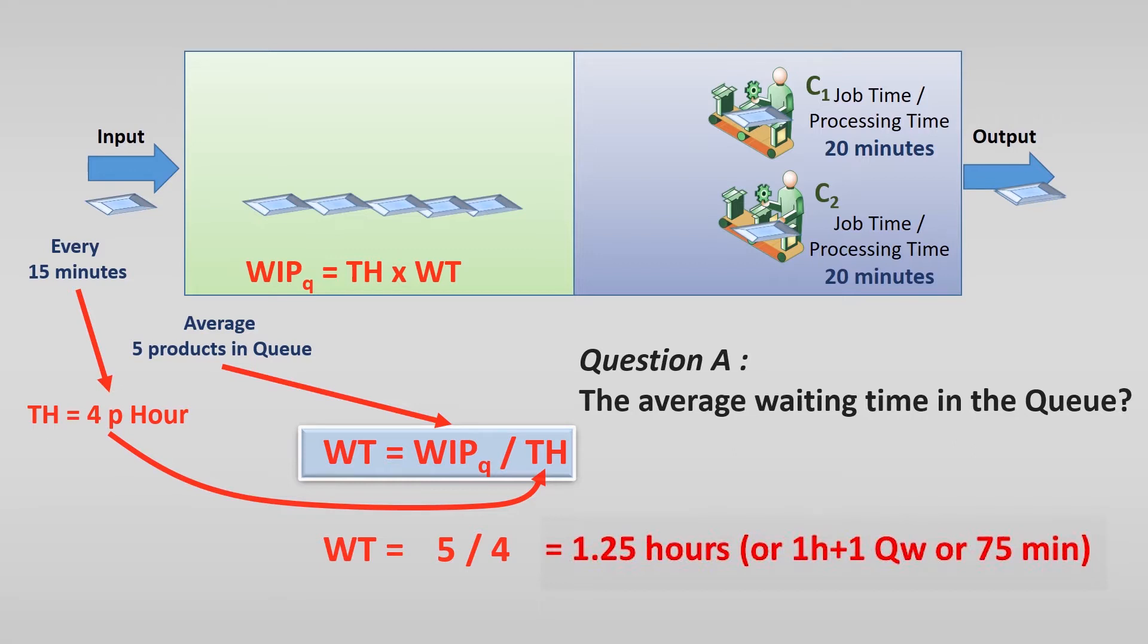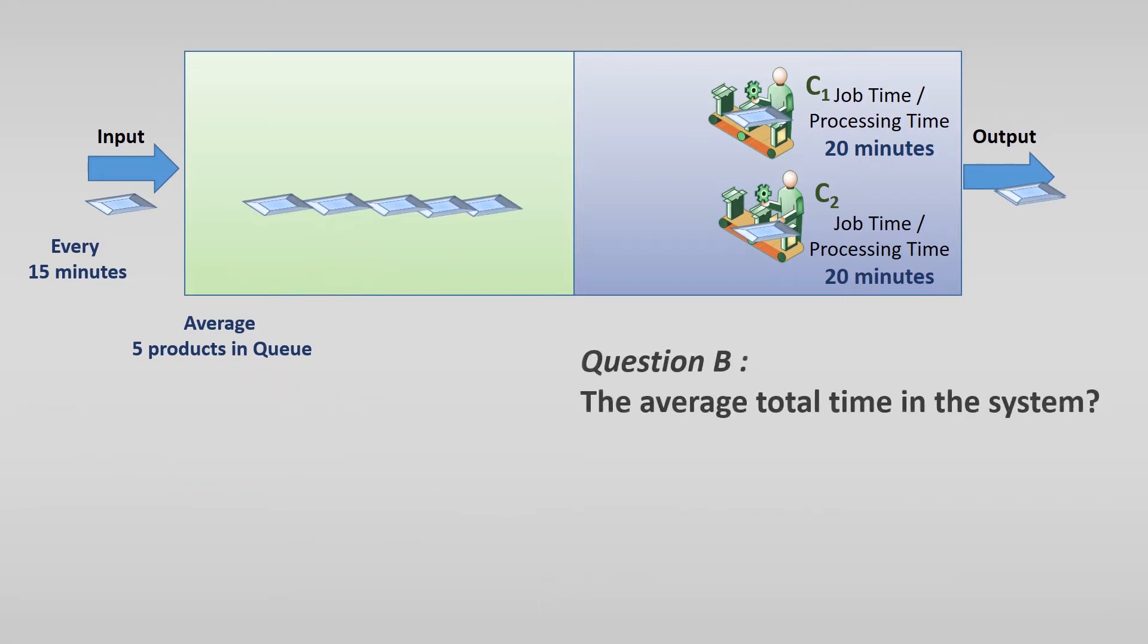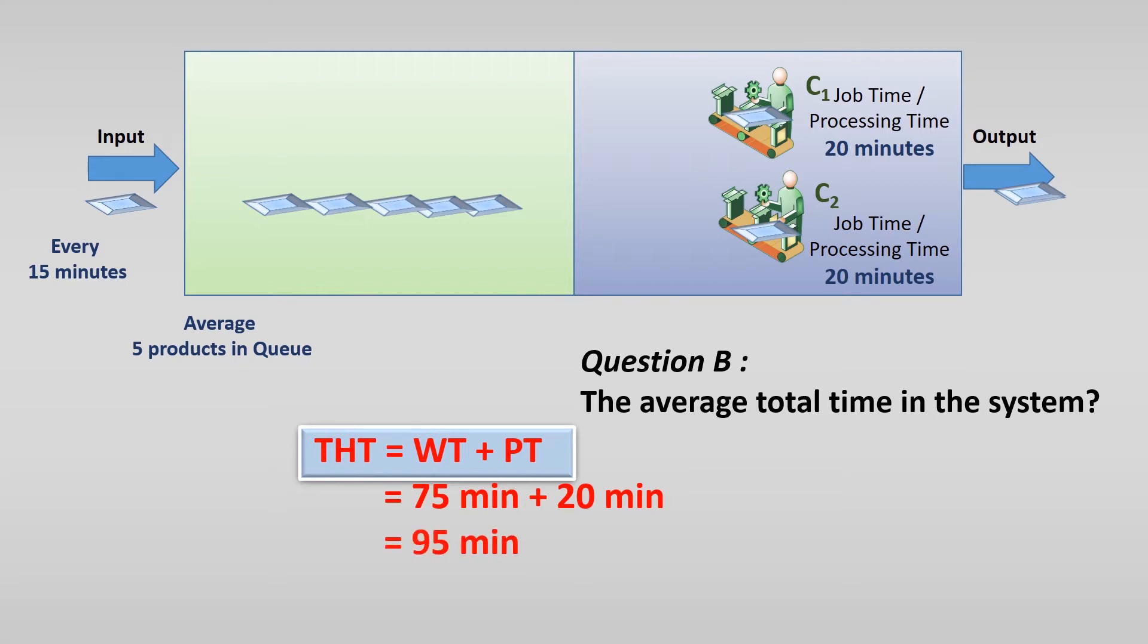For the second question, we want to know the total time of a product, how long it stays in the system. This is the time the product waits in the queue, which is 1.25 hours or 75 minutes, and add up the time it takes to process one product, which is 20 minutes. So the total time is 95 minutes.